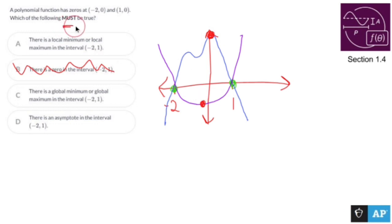We don't have to have a zero in between our zeros. There's a local minimum or a local maximum, or there is a global minimum or a global maximum. We'll talk about that in a little bit.